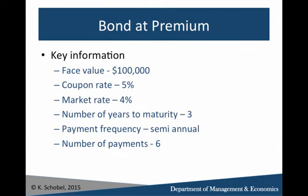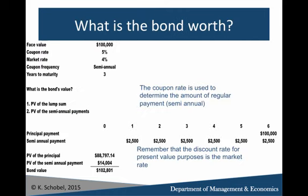For a premium, the same basic idea applies, except now the market rate is less than the coupon rate — 4% instead of the coupon rate of 5%. Using the same schedule, the semi-annual payment remains $2,500 and the lump sum is still $100,000. But now we discount using that 4% market rate — semi-annually, that's a 2% discount rate. Using present value tables or Excel formulas, we end up with a bond value of $102,801, just slightly over $100,000.